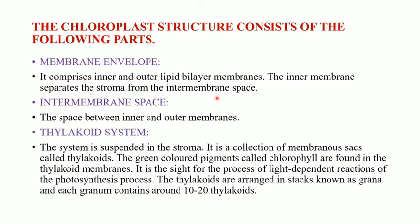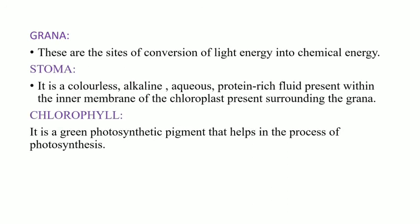The thylakoid system is a collection of membranous sacs. The green-colored pigment chlorophyll is found in the thylakoid membranes, and it is the site for light-dependent reactions in photosynthesis. Thylakoids are arranged in stacks known as grana, and each granum consists of 10 to 20 thylakoids. Grana are used for the light reaction and the conversion of light energy into chemical energy.